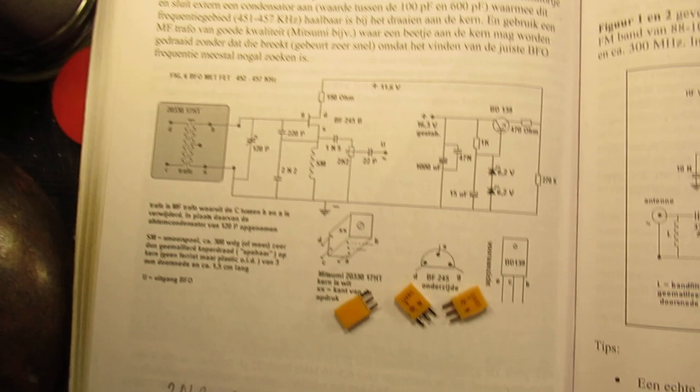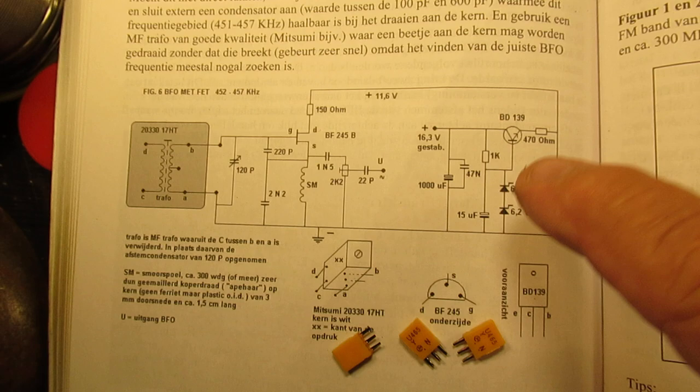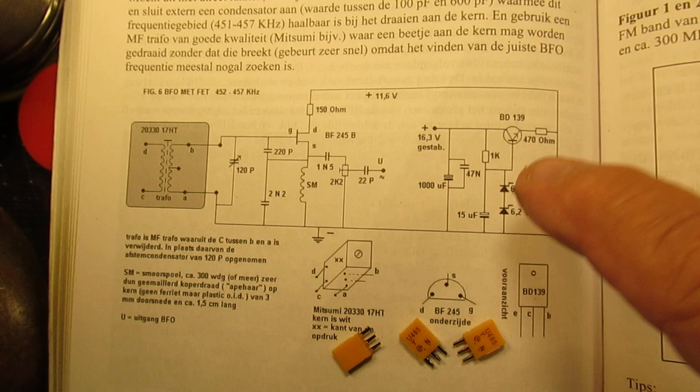By the way, a 7812 voltage regulator does not always work properly with this circuit, so that's why I used here the classical series regulator.